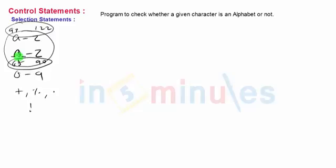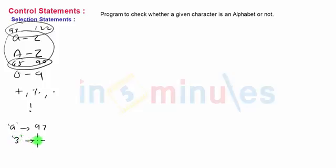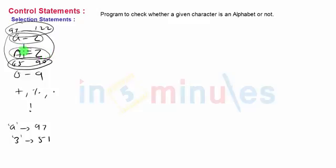We don't actually need to remember the ASCII codes, because when you write a letter in single quotes it is internally assumed to be its ASCII code. For example, 'a' in single quotes is 97, and character '3' in single quotes is 51. So we check whether the character is in the range 'a' to 'z' or 'A' to 'Z' using single-quoted character notation.